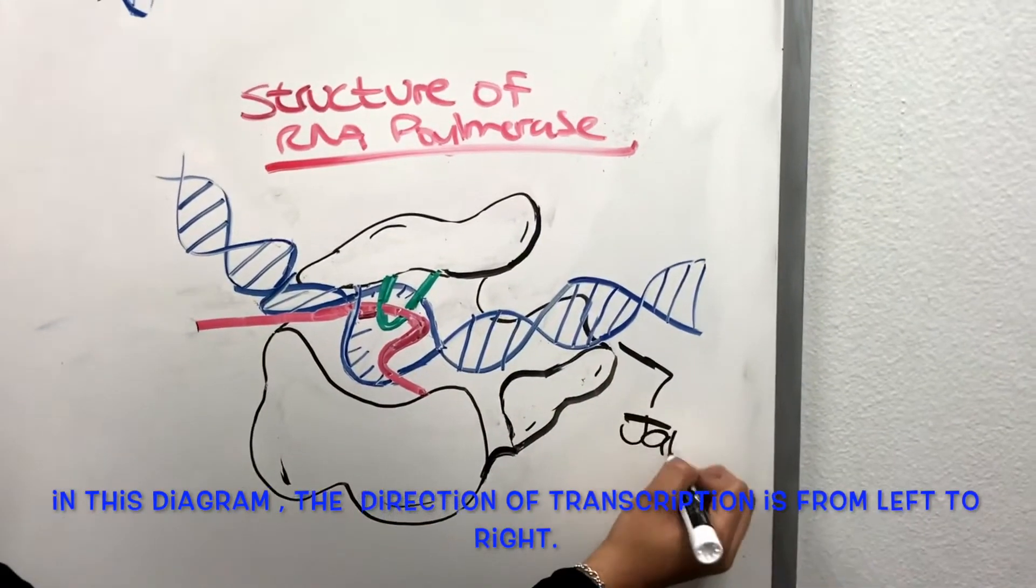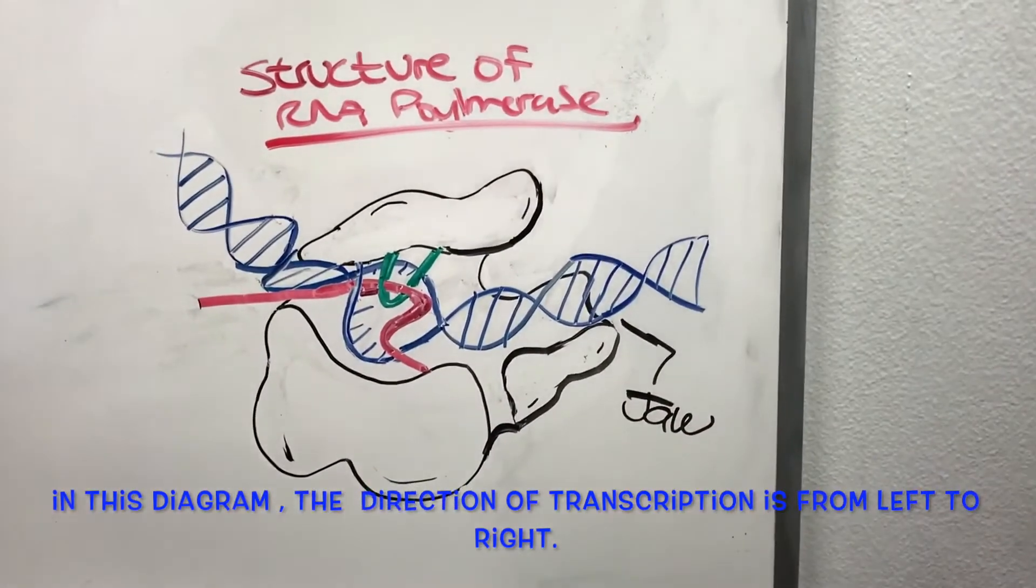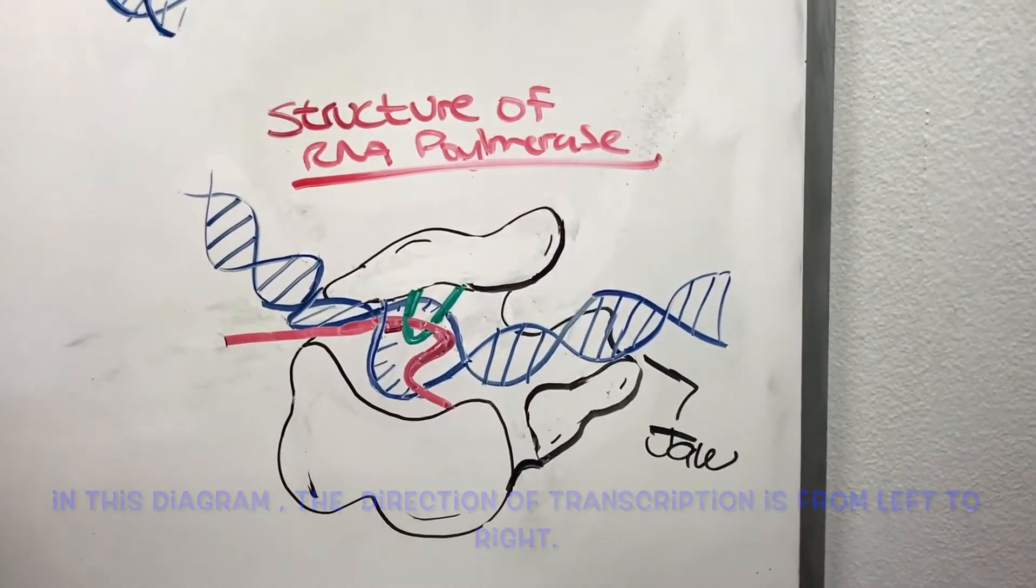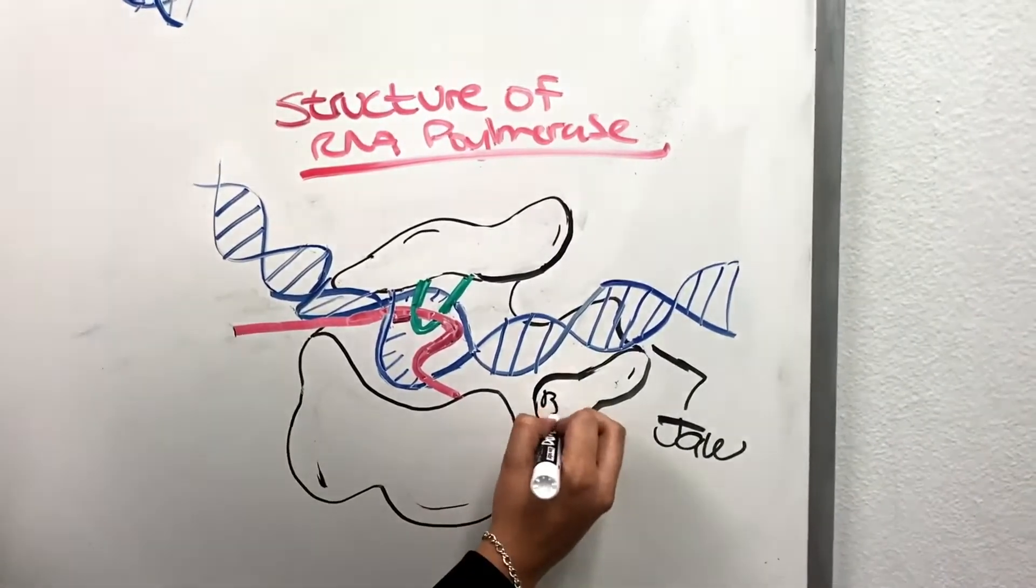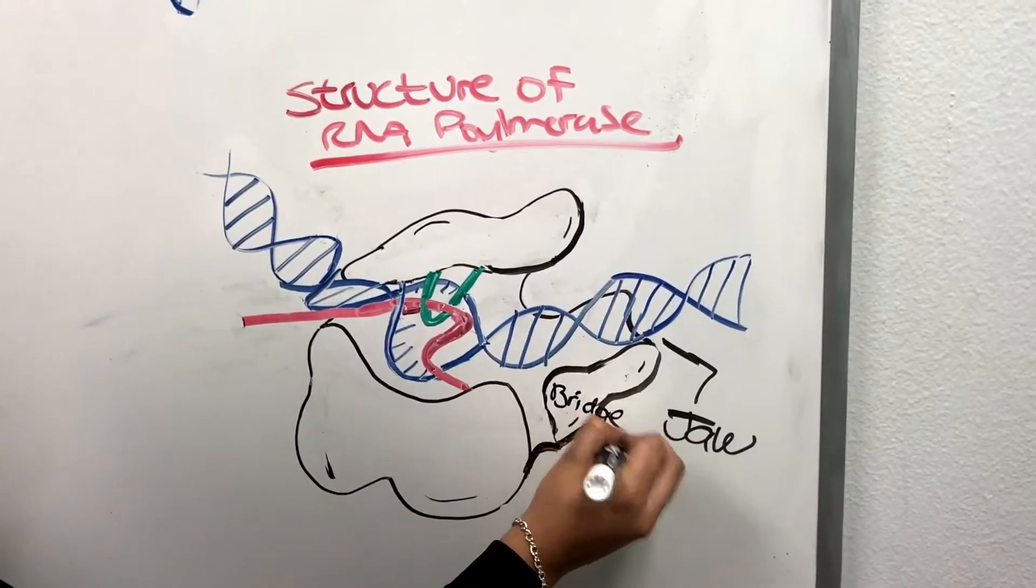So at the jaw, the DNA starts to enter into the RNA polymerase. And at the bridge, the DNA is lying across the bridge as it enters into the enzyme.